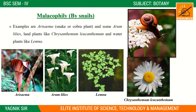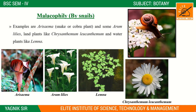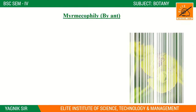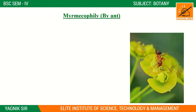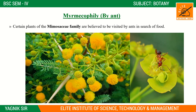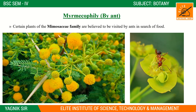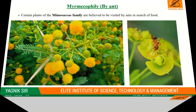Malacophily involves pollination by snails. Examples include Arum lilies and chrysanthemum. Myrmecophily involves pollination by ants — found in the Mimosa family, where a type of ant serves as pollinator. As ants gather food from flowers, pollen sticks to them and is transferred from one flower to another.